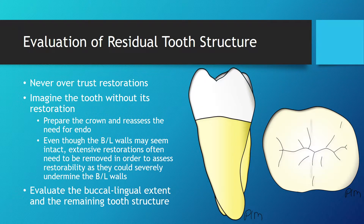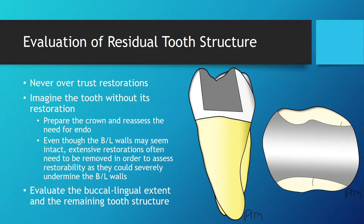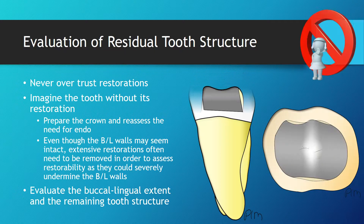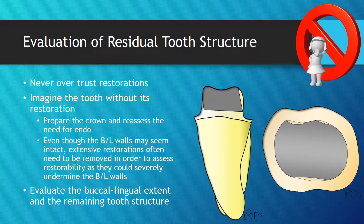In the second situation, an extensive direct restoration is present. Even though tooth structure is present on the buccal and lingual sides, it may get extremely thin following tooth preparation for external coverage. Depending on the angulation of the restoration, it may actually undermine tooth structure, as seen on this image.